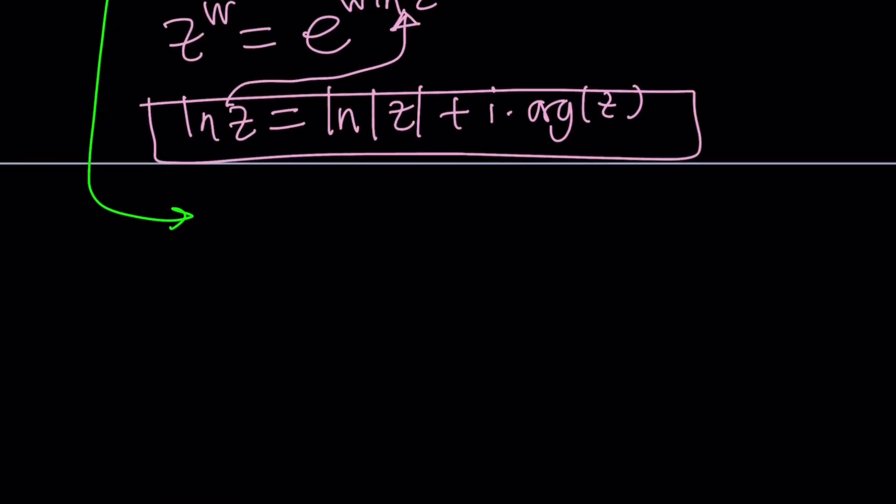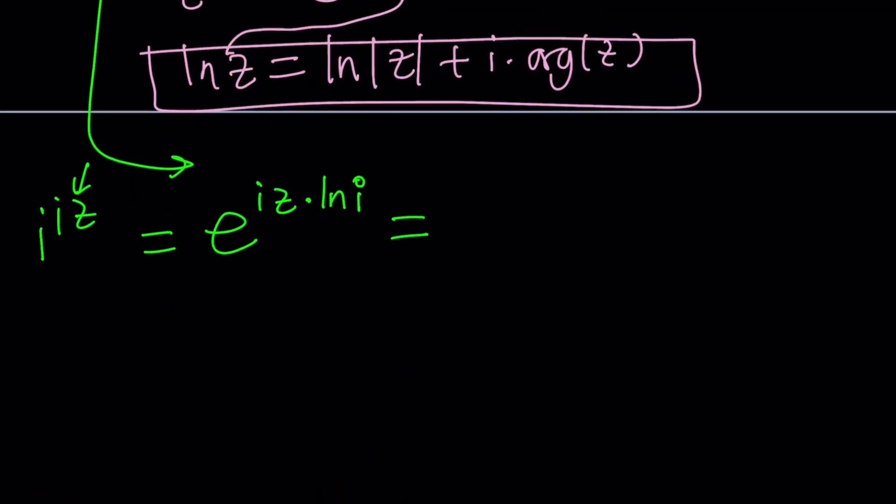Let's go ahead and use that formula to convert it to the polar form or exponential form. I'm going to write i to the iz as e to the power iz multiply by ln i, and that equals 1.